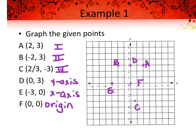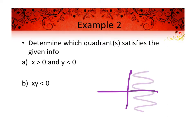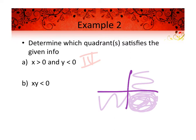You'll probably never see a question like that on a quiz or test, but we do it for review. Now for a little critical thinking: determine which quadrant satisfies the given conditions. Part A says x is greater than zero and y is less than zero. X greater than zero means to the right of your y-axis, and y less than zero means underneath, so we need both to be true — that's specifically quadrant four.